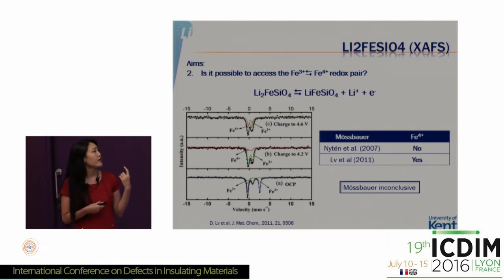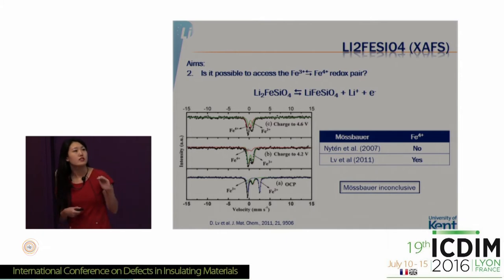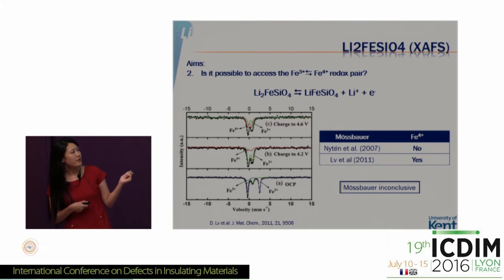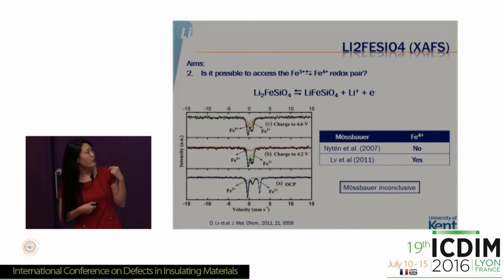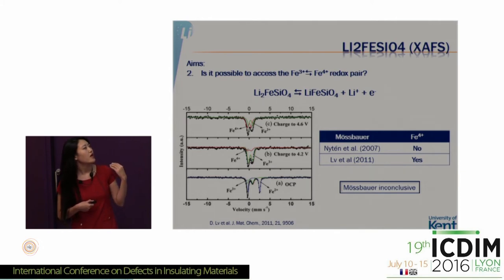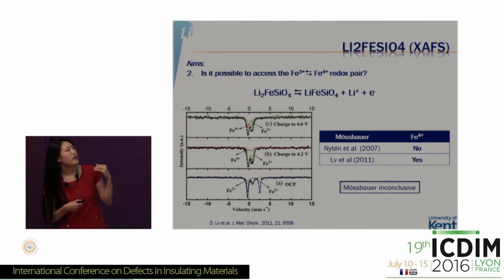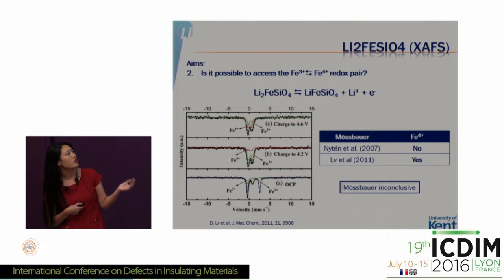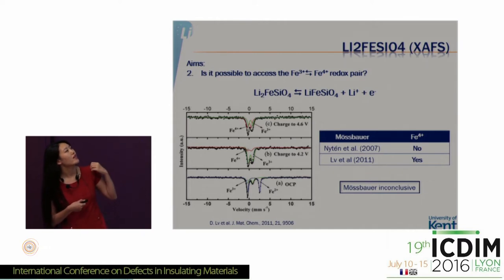Back in 2007, one group did not see any Fe4+ from their Mössbauer spectra. Then a new group said yes to Fe4+. In the pristine sample, they saw Fe3+ and Fe2+, and then when lithium was removed from the structure, they started to see the formation of Fe4+, which increased further upon complete delithiation of the structure.